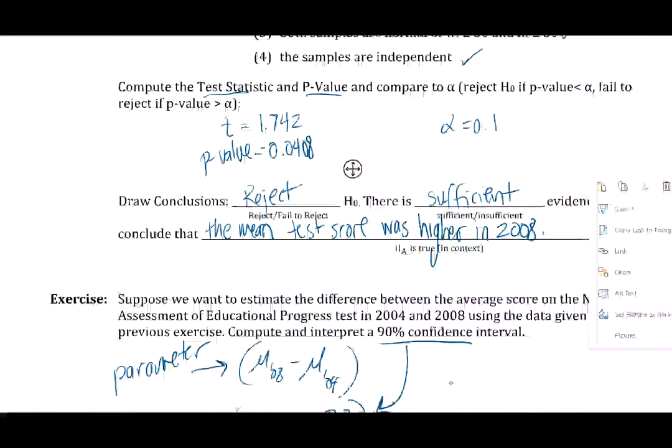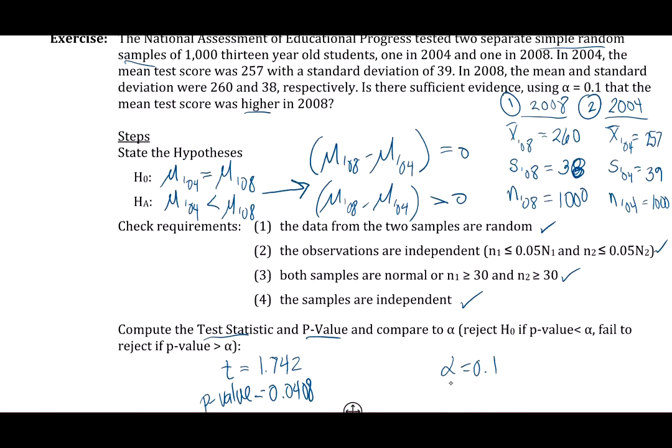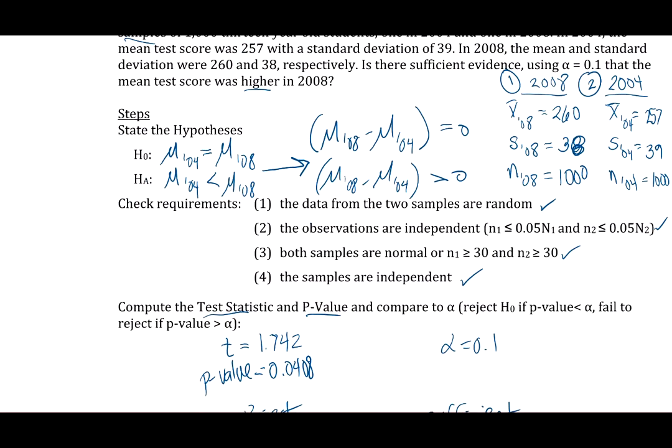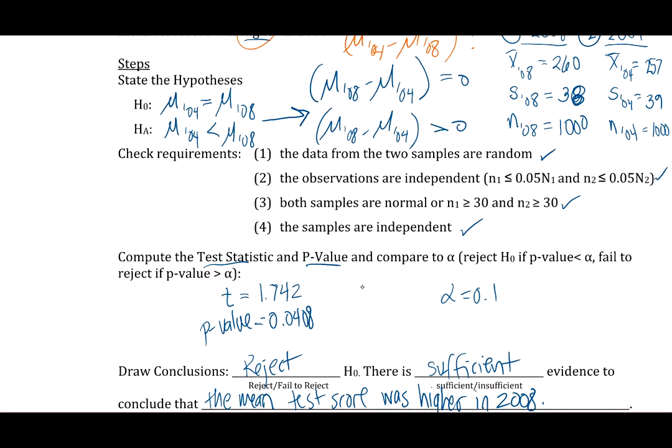Now one more thing I want you to think about. At this problem at the very beginning, I set it up so that I was subtracting 2004 from 2008 because I was looking to see that increase. You might have set it up the other way around. You might have written 2004 minus mu for 2008. What would change? I'd like you to think about that and carry it out. Maybe try it in GeoGebra.